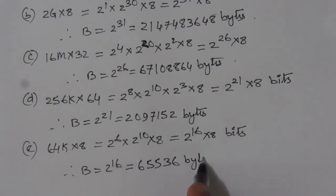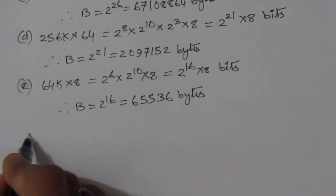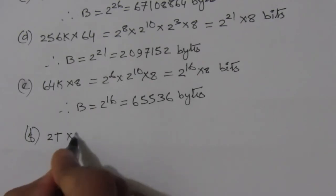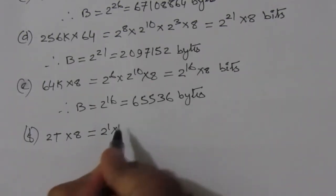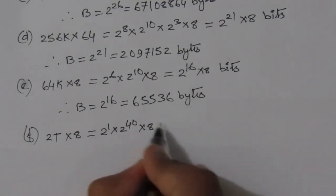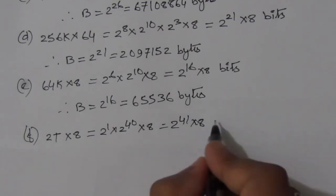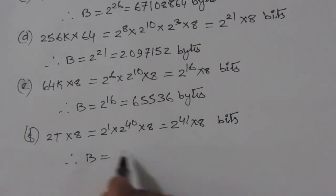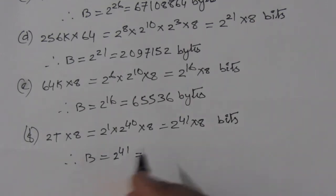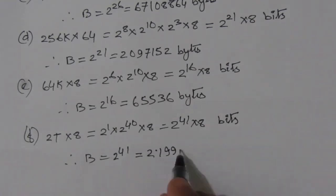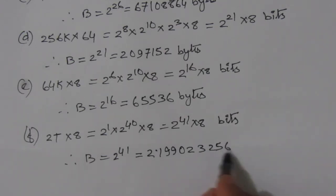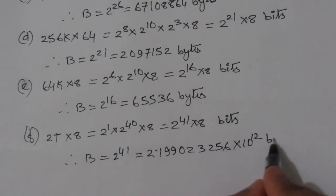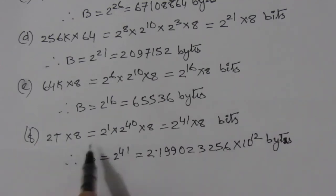In part f, we have 2T × 8. Here T = 2^40, so we have 2^1 × 2^40 × 8 = 2^41 × 8 bits. Dividing by 8, B = 2^41 = 2.19902325 × 10^12 bytes. This is the solution to problem 7.2. If you have any questions, please put them in the comment section below. Also like, share, and subscribe to my channel.